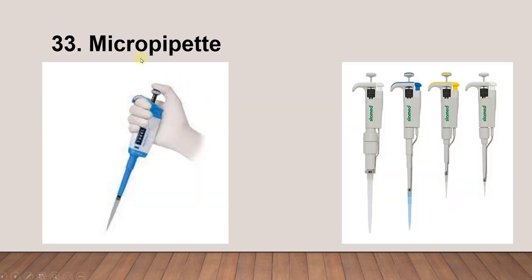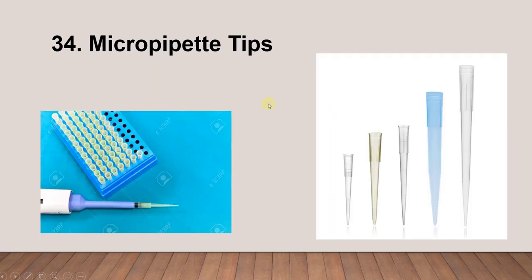Next is the micropipette. You need a micropipette for very small volumes. We have different volume ranges — you may start from 0.2 microliters up to 10,000 microliters, or 10 ml. When you use a micropipette you need tips to transfer the solution. You can see different sizes and types of tips.